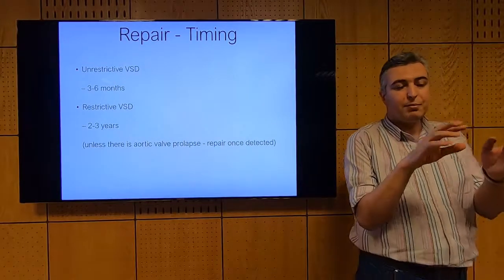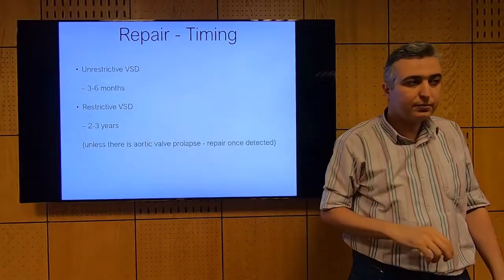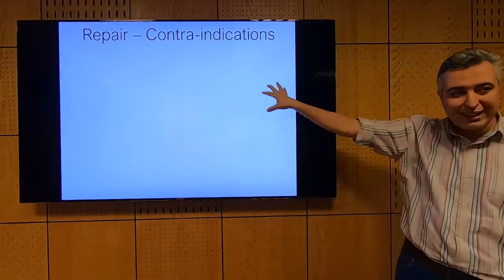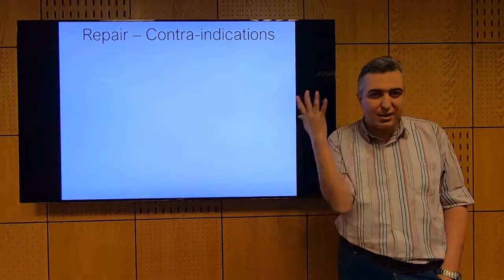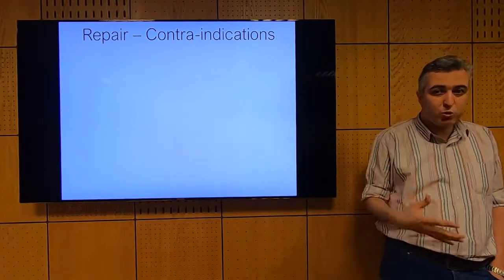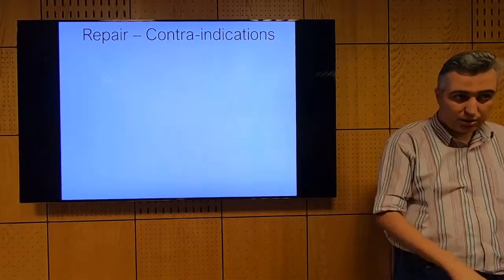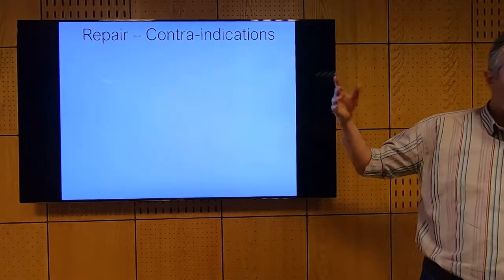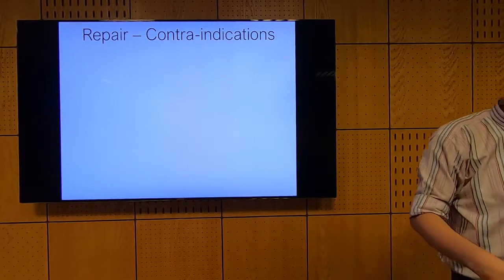Eisenmenger syndrome is a contraindication for VSD closure. The median survival with Eisenmenger is nearly 20 years, while closing the VSD carries high perioperative mortality or significant morbidity from RV failure. The contraindication is essentially the development of irreversible pulmonary vascular disease.